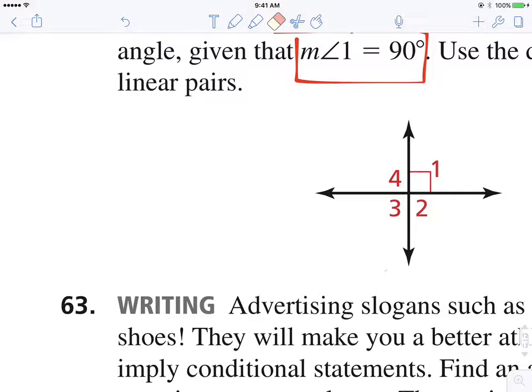So the measure of angle one is 90 degrees. Let's find the measure of angle two. Well, angle one and angle two are linear pairs, right?